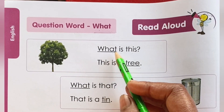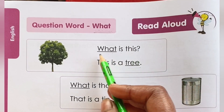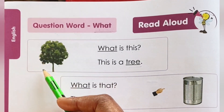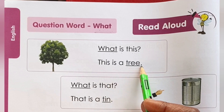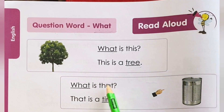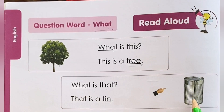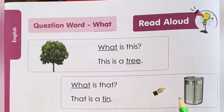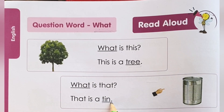For example: What is this? This is a tree. What is that? That is a tin.